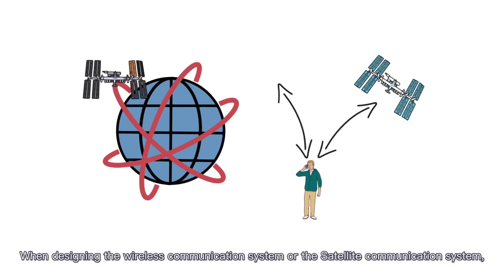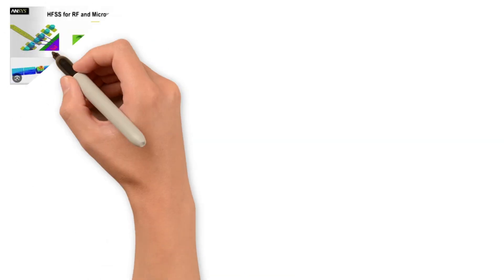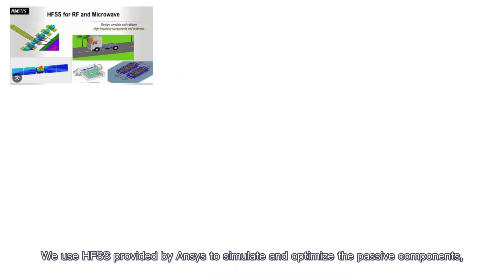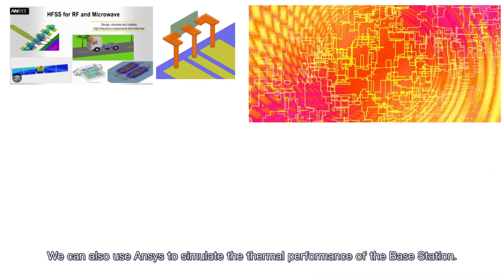When designing the wireless communication system or the satellite communication system, lots of simulations are conducted. We use HFSS provided by Ansys to simulate and optimize the passive components, such as antenna, feeding structure, and footprint. We can also use Ansys to simulate the thermal performance of the base station.